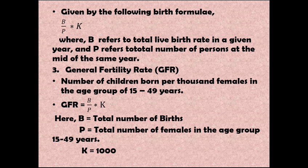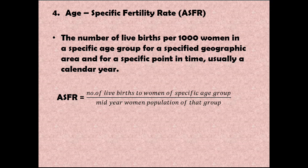Next we have the General Fertility Rate, which is the number of children born per thousand females in the age group of 15 to 49 years. This age group is taken because it is considered to be the child-bearing age group. The formula is: GFR = (B ÷ P) × K, where K is one thousand, B is the total number of births, and P is the total number of females in the age group of 15 to 49 years.